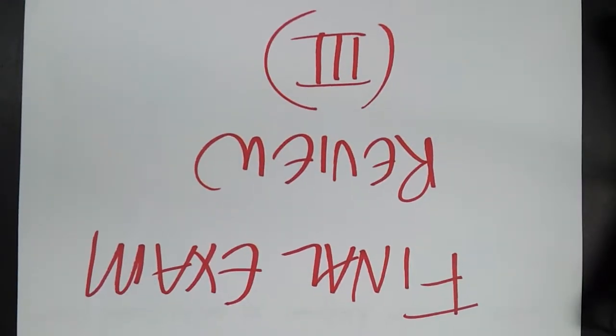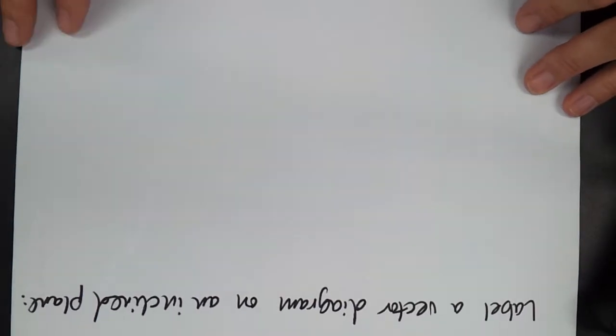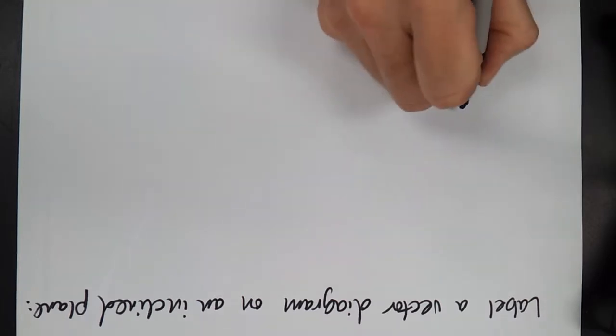All right, so this is final exam review three, and we are going to start off with labeling a vector diagram, free body diagram, for an object that is sitting on an incline plane.